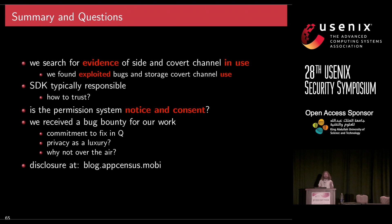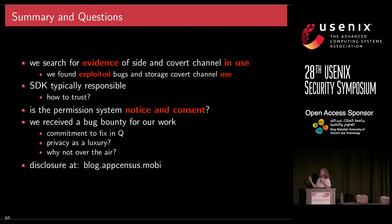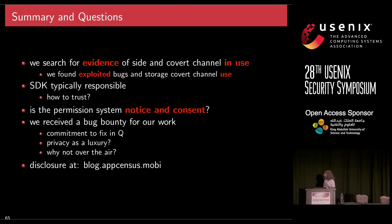We received a bug bounty for our work. Google has committed to fix the eligible issue in version Q — protecting the ARP cache at /proc/net/arp, which was just a file system permission change. In some sense, it seems like privacy is a luxury because you have to buy a brand new phone to get Q, whereas this really should just be an over-the-air update — it's not that hard to change a file system permission. All disclosure information and stories are available at blog.appcensus.mobi.